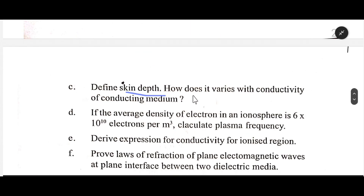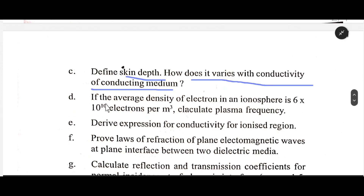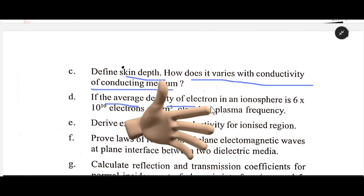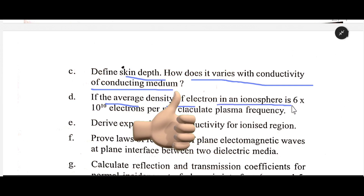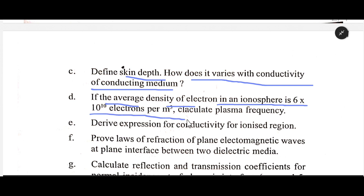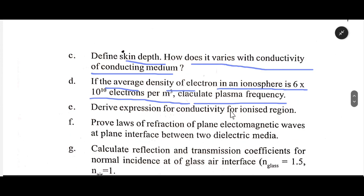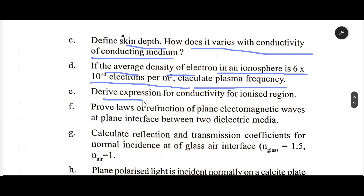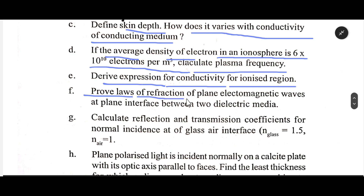Define skin depth. How does it vary with the conductivity of a conducting medium? If the average density of electrons in the ionosphere is 6 × 10¹⁰ electrons per meter cube, calculate the plasma frequency. Derive an expression for conductivity for an ionized region.